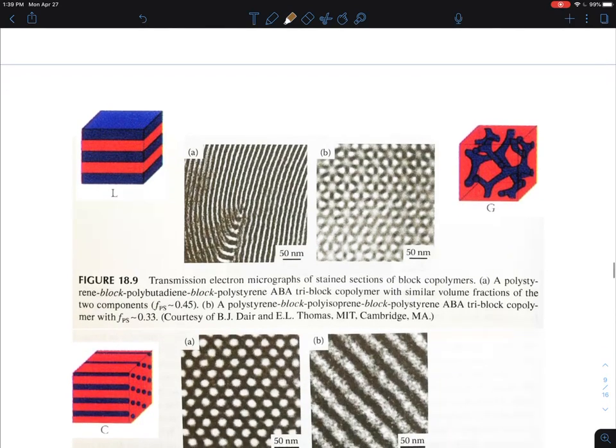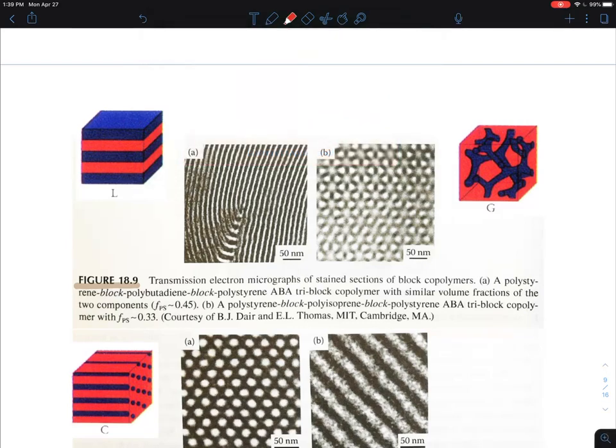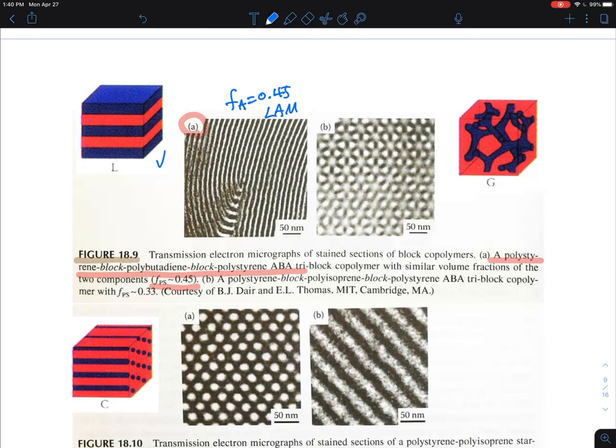This picture is from the textbook. Transmission electron microscopy is widely used in the block copolymer field. A is polystyrene-polybutadiene-styrene, ABA triblock with average composition about 50-50. FA is about 0.45, which is lamellar structures. Another is styrene-isoprene-styrene, SIS triblock with polymer A fraction about 0.33, an ABA triblock.